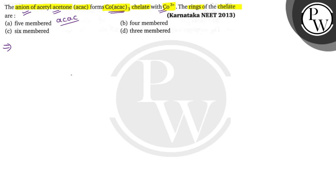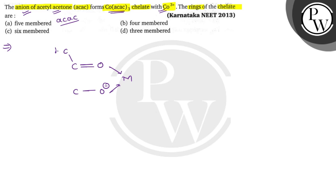Let's draw the ring to understand the structure. When we draw the ring, it will have a structure like this: first, a C=O double bond, then a single bond with a negative charge connected to the metal ion. On both sides there are CH₃ groups, and finally a carbon with both single and double bond character and one hydrogen. This gives us the structure of the acetylacetonate ligand.